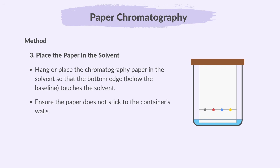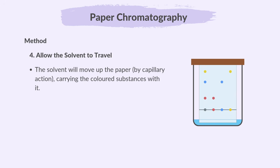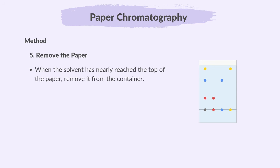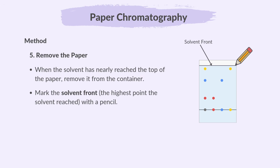Ensure the paper does not stick to the container's walls. The solvent will move up the paper by capillary action, carrying the coloured substances with it. Different substances travel at different rates based on their solubility in the solvent and their attraction to the paper. When the solvent has nearly reached the top of the paper, remove it from the container. Mark the solvent front — the highest point the solvent reached — with a pencil. Allow the paper to dry.